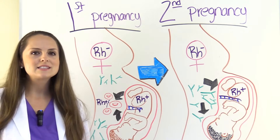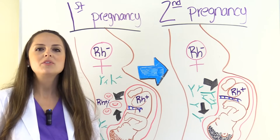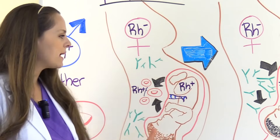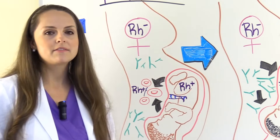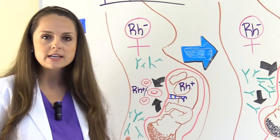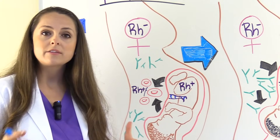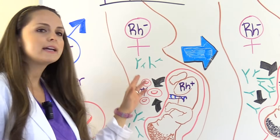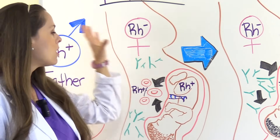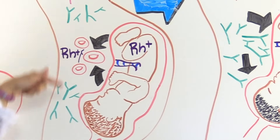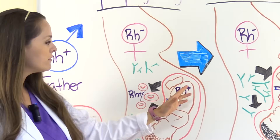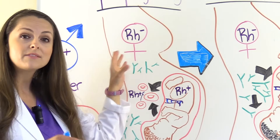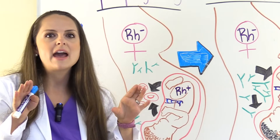Let's start out talking about what RH incompatibility is. This is where you have a mother who is RH negative and she's carrying a baby that is RH positive. What happens is usually at the end of the pregnancy, whenever it's time to deliver the baby, the blood from the baby will mix into the mother's circulation, and this will cause mom's body to create antibodies, because whenever this RH positive blood got into mama's system who's RH negative, the body sees that as a foreign invader.